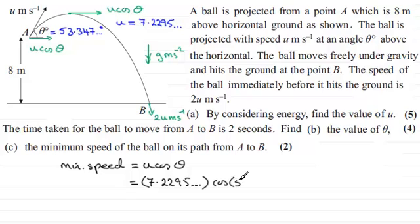And we need to multiply that with the cosine of the angle theta. And if I take the unrounded version for that, that was 53.347 and so on. And that was measured in degrees. So do this on your calculator, and you should find you get 4.3157 and so on. And rounding this, say, to one decimal place gives us 4.3. 4.3 metres per second to one decimal place.